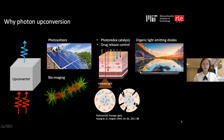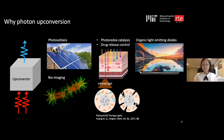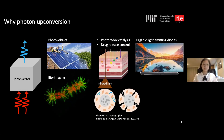Another example is a green-to-blue upconverter that can make a very stable blue organic light-emitting diode by sticking the upconverter on top of a green organic diode and converting that green emission into stable blue emission. These are just some examples of how photon upconversion can be applied across many fields.